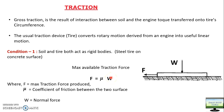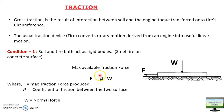Now, this mu is the coefficient of friction, which can also be expressed in terms of the angle of internal friction. If you look it up, you will find that mu equals tan theta, where theta is the angle of internal friction. So F_max equals W times tan theta, where W is the normal load.